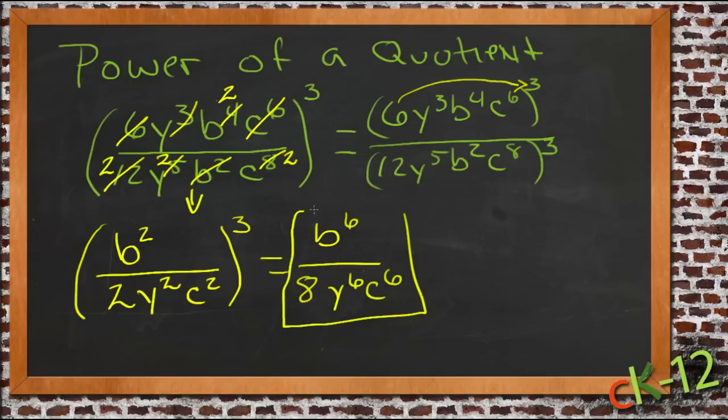So that gives our final answer as b to the 6th over 8y to the 6th c to the 6th. So much, much simpler than trying to go with these big numbers ahead of time.